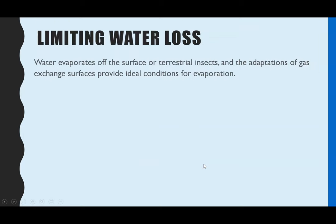Limiting water loss is one of the big things for any organism that lives on land, which is what we mean by terrestrial. They have to balance being able to exchange gases with reducing the amount of water loss, and in particular AQA focuses on insects and plants.